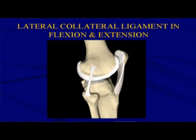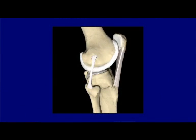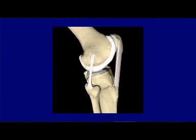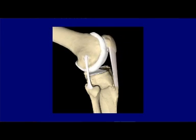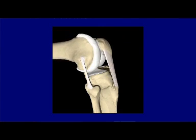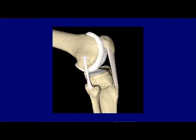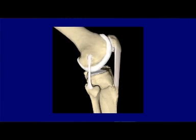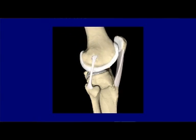Here's the lateral collateral ligament. You can see the movement of the femur on the tibia, and also look at the ligament moving forward and back. Look at the whole movement of the whole joint here.